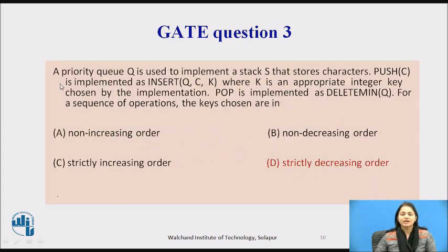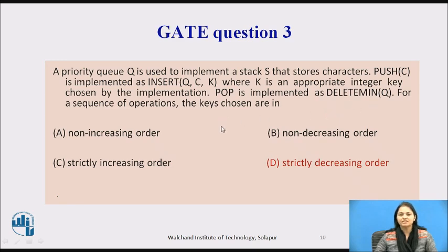So as we have seen, we are implementing a stack using a priority Queue and we have to push elements in strictly decreasing order of keys, so that when deleting, the minimum value — which has the highest priority — comes out first, preserving last in first out order.